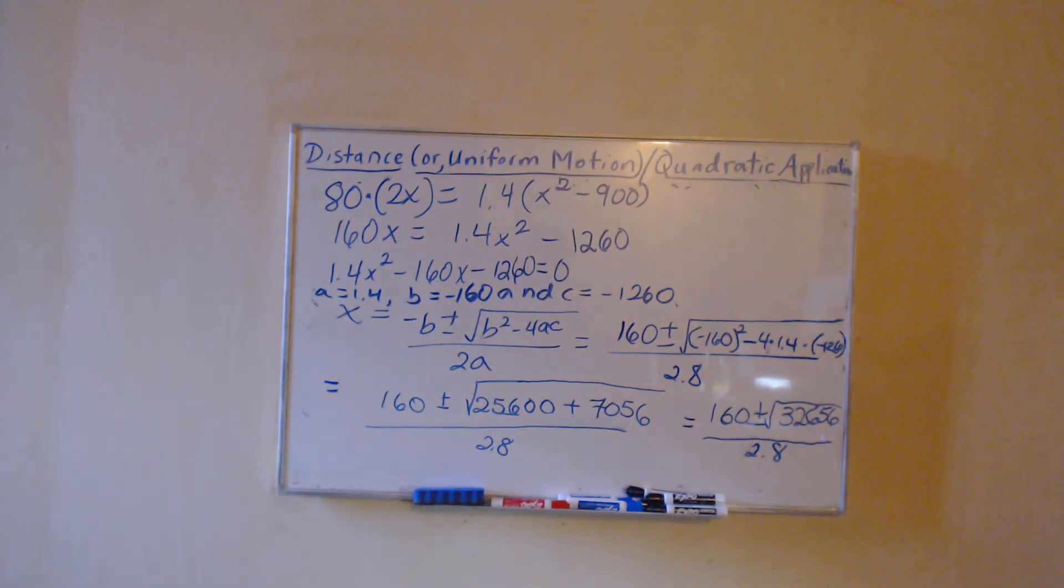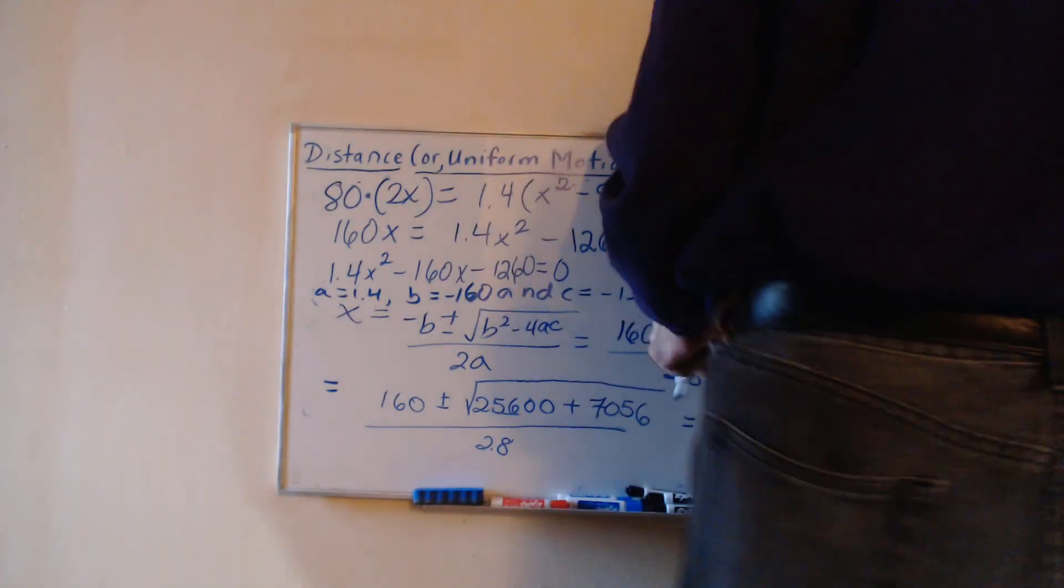And looking back at the directions, it was calling for rounding the speed of the plane to the nearest whole number. So we're going to round our answer for x to the nearest positive integer. So that's going to come up at the very end.